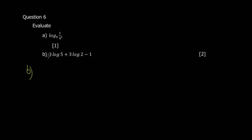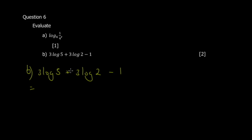Part b wants us to evaluate 3 log 5 plus 3 log 2 minus 1. One way to go about it is to join them into a single logarithm.